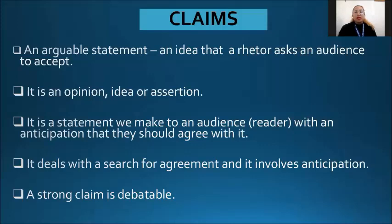When you talk about critical reading, it involves analyzing and understanding the implicit information added or written by the author in a certain paper. Implicit information refers to information which can't be seen directly from the writings — it is not directly expressed through words, but you can analyze it by understanding all the words written by a writer or author. These are hidden.